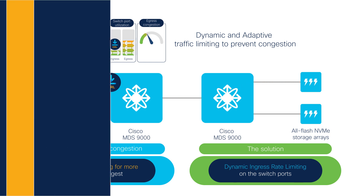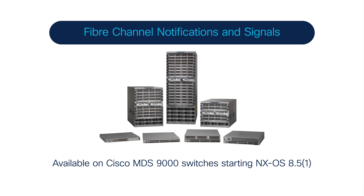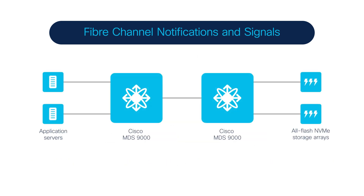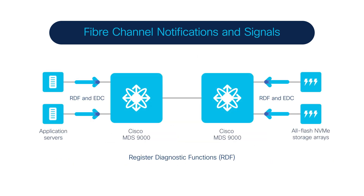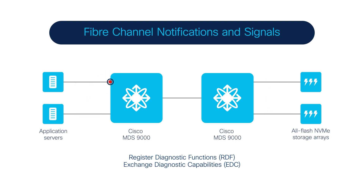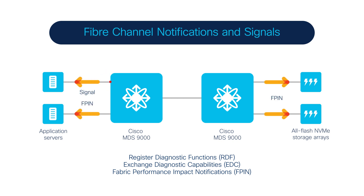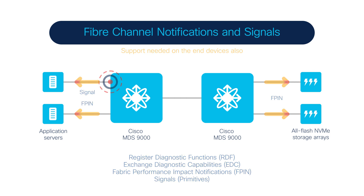There is no frame dropping by DIRL — it works using the B2B credit pacing mechanism of the Cisco Fibre Channel ASICs. Cisco MDS switches also support the standards-based approach of sending notifications and signals. End devices can register their capabilities using Register Diagnostics Function (RDF) and Exchange Diagnostics Capability (EDC). When a congestion or link integrity event is detected, the MDS switches send a Fabric Performance Impact Notification (F-pin) and signals to the end devices.